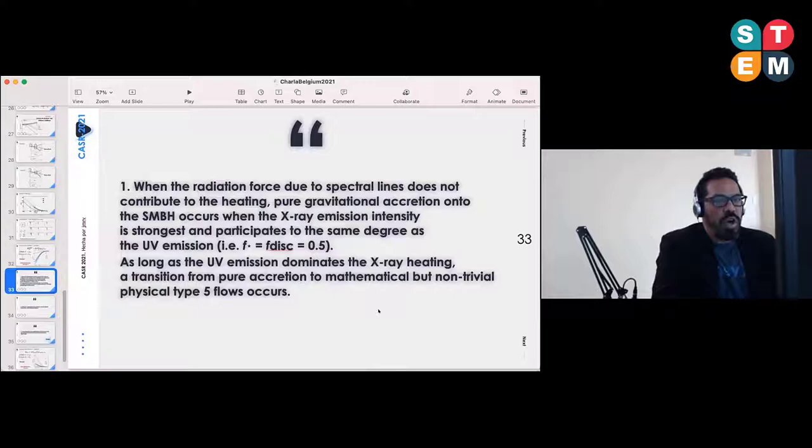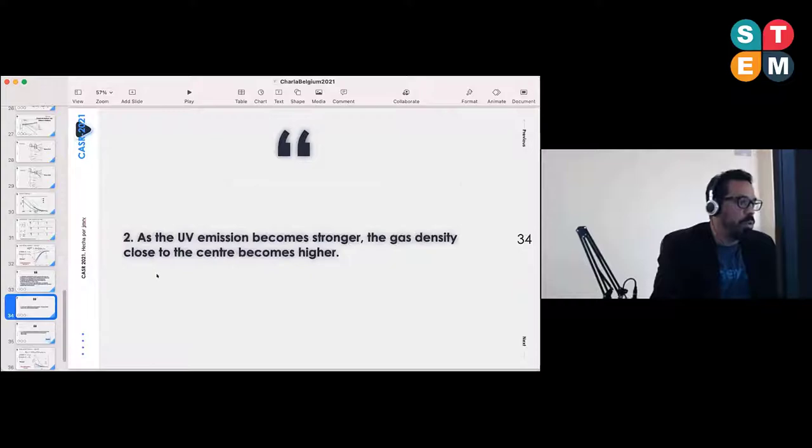I only brought three final conclusions. All the other conclusions or similar conclusions are found in Ramirez 2019, and the others are, as I said, in ongoing research which will hopefully show some of the results in the near future. So: when the radiation force due to spectral lines does not contribute to the heating, pure gravitational accretion onto the supermassive black hole occurs. When the X-ray emission intensity is the strongest and participates to the same degree as the UV emission, as long as the UV emission dominates the X-ray heating, a transition from pure accretion to mathematical but non-trivial physical type one flows occur. This is something we have been taking care of in all the calculation and mentioning in several parts of the work.